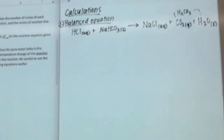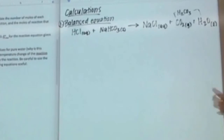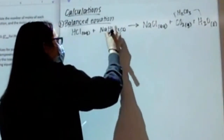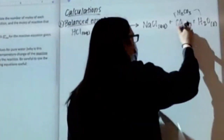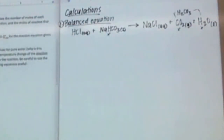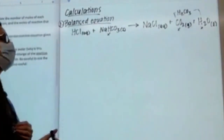If we want to look at the net ionic equation, we have to break apart strong electrolytes. The only state of matter that can potentially be broken apart is aqueous. So baking soda cannot break apart, carbon dioxide cannot break apart, and H2O cannot break apart. The only substances that can break apart are HCl and NaCl.